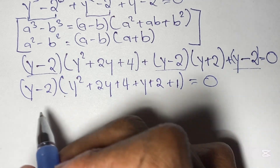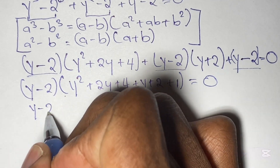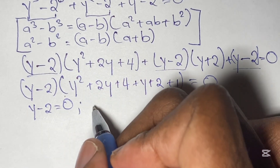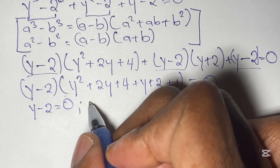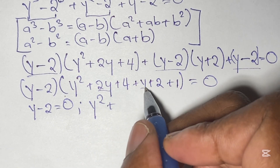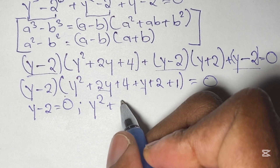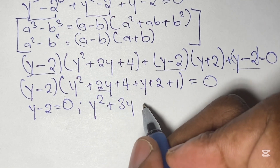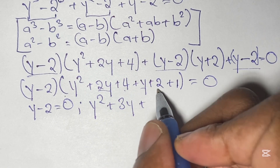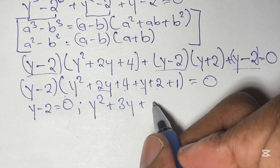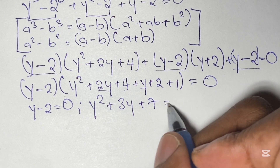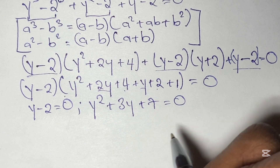From here we say y minus 2 equals 0. In the other bracket, we gather like terms: y squared, plus 2y plus y gives us 3y, and 4 plus 2 is 6, plus 1 is 7. So we have y squared plus 3y plus 7 equals 0.